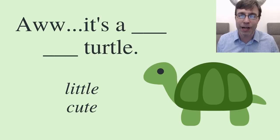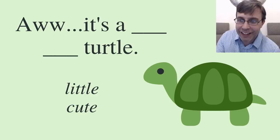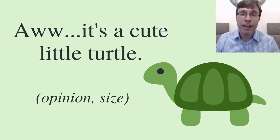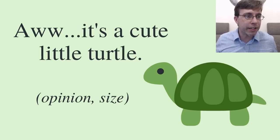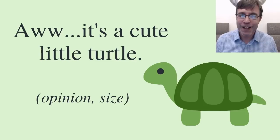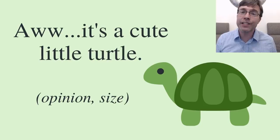Don't worry about making mistakes — this is just about practicing and for your benefit. I see some great answers. Yes — it's a cute little turtle. Cute is the opinion, little is the size — you go with opinion first and then size. If I wanted to say another opinion I might say, 'It's a delicious little turtle.' Or using color, 'It's a cute green turtle,' or 'It's a little green turtle' — color would come after size. In this case we're using opinion over size.